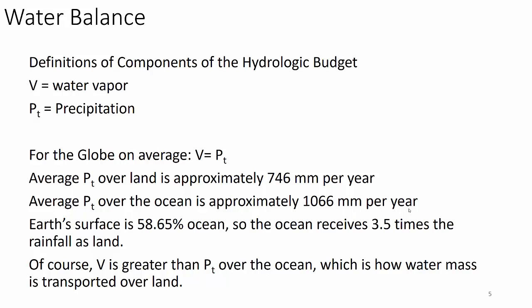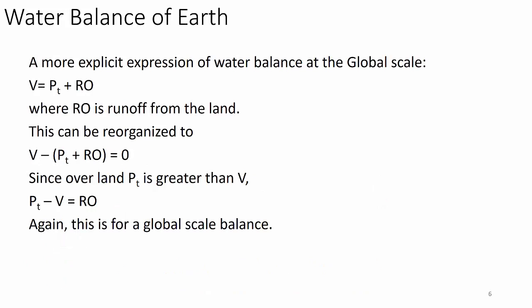Evaporation drives the hydrodynamic cycle. The mass of water vapor V in the atmosphere is greater than Pt over the ocean, which is how water mass is transported over land. They're not in equilibrium everywhere — over an entire annual cycle they're roughly in equilibrium, but not instantaneously at a particular place. Thank goodness — that's how we get rain.